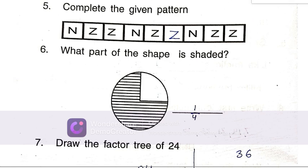Which part of the shape is shaded? 1 by 4 is not shaded and 3 by 4 is shaded.